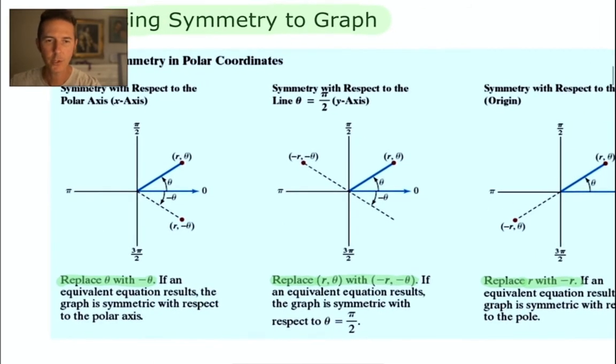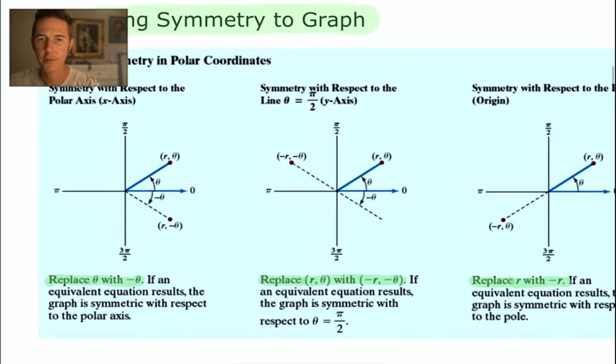If an equivalent equation results, the graph is symmetric with respect to the polar axis. That's how it's phrased in print.